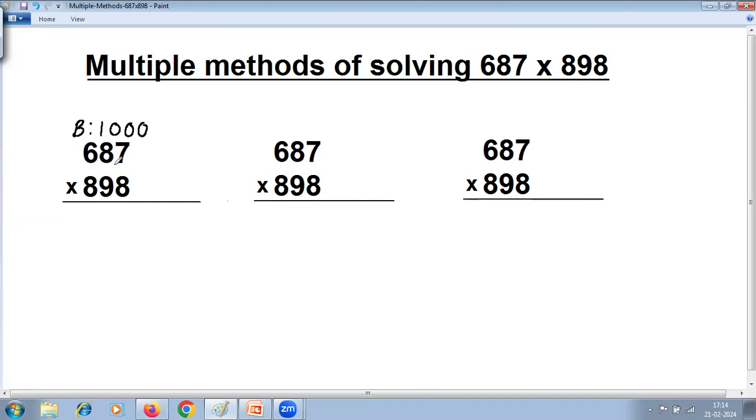Find difference. For less than the base, to find difference you can use all from 9, last from 10. 9 minus 6 is 3, 9 minus 8 is 1. Last from 10, 10 minus 7 is 3. Put minus 313. 9 minus 8 is 1, 9 minus 9 is 0, and last from 10, 10 minus 8 is 2. Put minus 102.